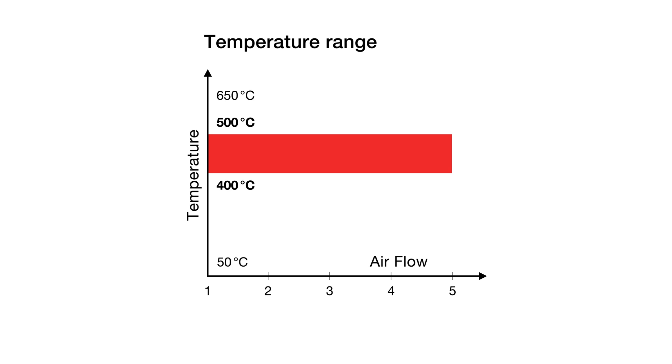If materials have to be processed within a certain temperature range, that range should not be exceeded. The air volume level can still be adjusted from 1 to 5.